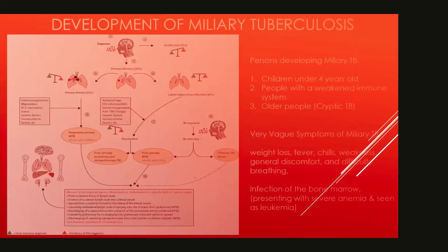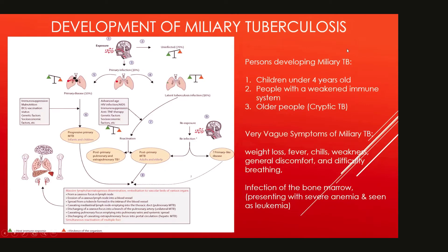In the development of MTB: 70% of people who are exposed won't be infected, but 30% will have host-pathogen interaction. In 90% of those cases, you have latent tuberculosis infection where it's contained. The remaining 10% develop progressive primary tuberculosis, with extensive lymphohematogenous dissemination through the lymphatics and blood circulation to various organs, resulting in miliary tuberculosis.